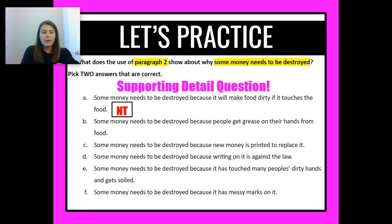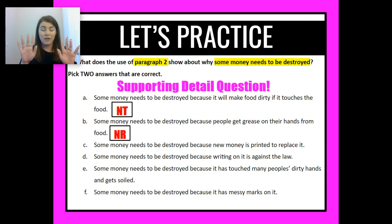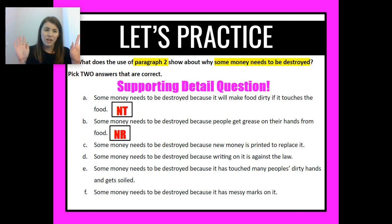Answer B: some money needs to be destroyed because people get grease on their hands from food. This one's not really relevant. The idea that eating food gets grease on my hands is not relevant to why some money needs to be destroyed. The relevant part would be taking that grease and putting it on money you're touching. This isn't detailed enough to answer the specific question being asked.